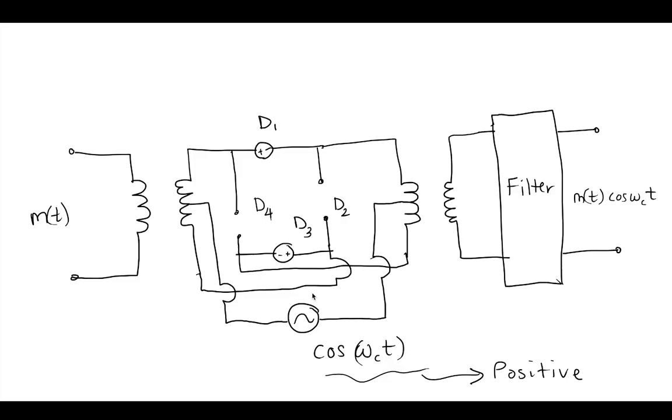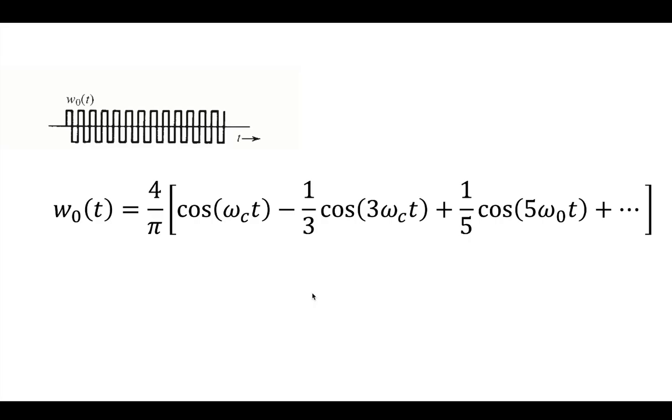When cosine omega ct is in the positive direction, you'll have diode 2 and diode 4 modeled as open circuits and 1 and 2 modeled as constant voltage drops. In the negative, you would have diode 1 and 2, or diode 1 and 3 open, while diode 2 and 4 become constant voltage drops. And so this basically allows different positive and negative parts to pass through this circuit.